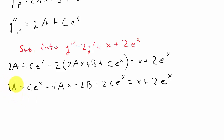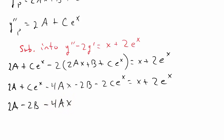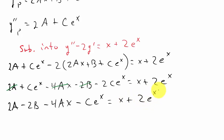Combining like terms: the constant terms give 2A minus 2B, the x terms give minus 4Ax, and combining Ce to the x minus 2Ce to the x gives minus Ce to the x. So the left side simplifies to (2A minus 2B) minus 4Ax minus Ce to the x, and that equals x plus 2e to the x.